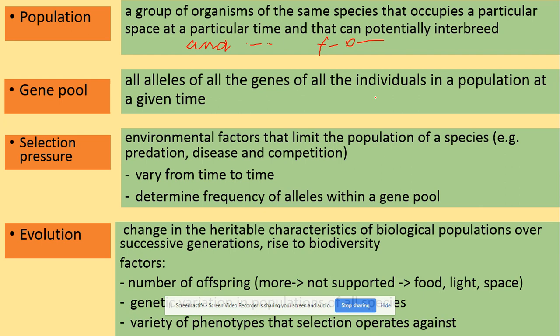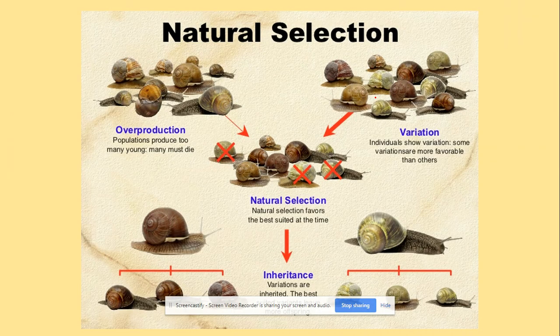Factors affecting evolution include the number of offspring, the number of generations, population size across all species, and the variety of phenotypes that selection operates against. For natural selection, the key factors that apply are overpopulation and variation. Within variation, phenotypes - the expression of the genotype due to environmental factors - can vary.